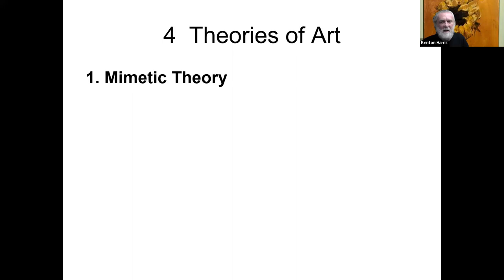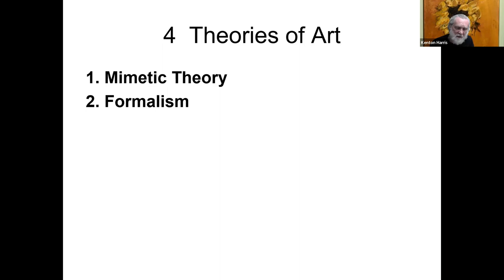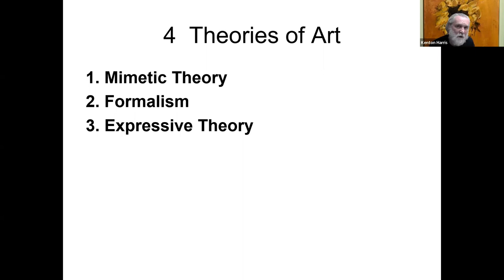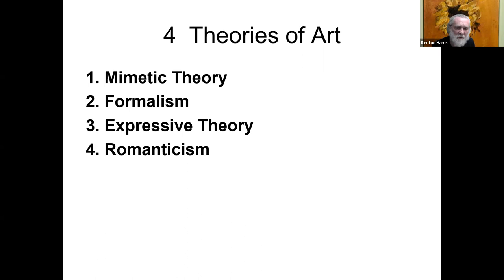The first theory of art we're going to look at is called the mimetic theory. To remember what mimetic is about, concentrate on the first four letters: M-I-M-E. This is the idea that art is essentially about miming or mimicking nature — it's an imitation of nature. Then we'll look at formalism, a different account of art. After that, expressive theory, a third account of what the nature of art is and what values we seek in art. Then romanticism, which is a sort of version of expressive theory, and media formalism.